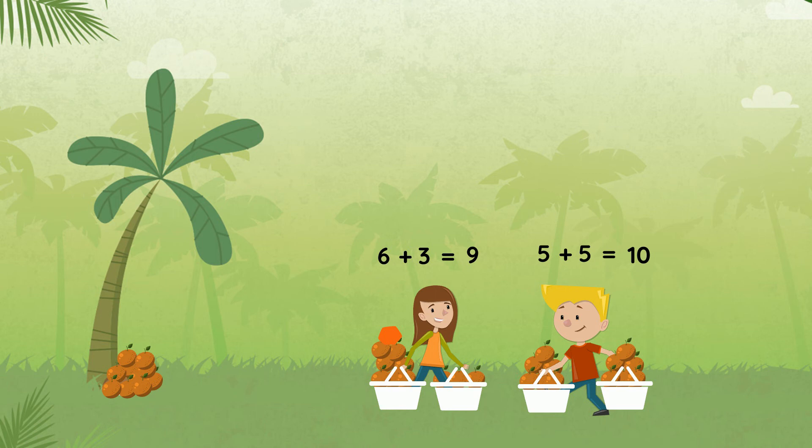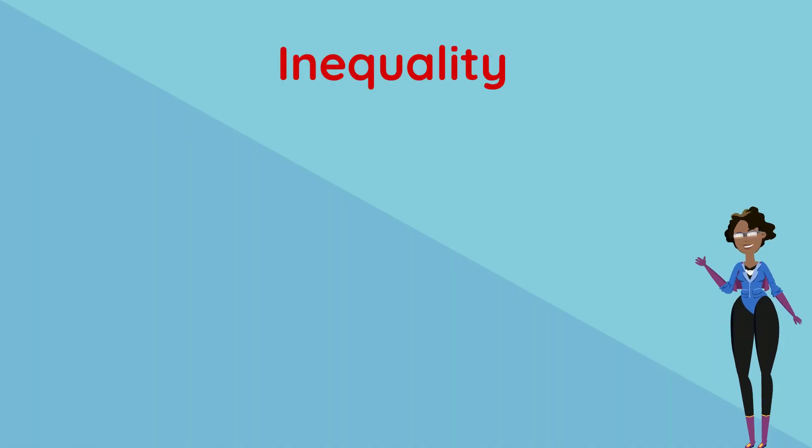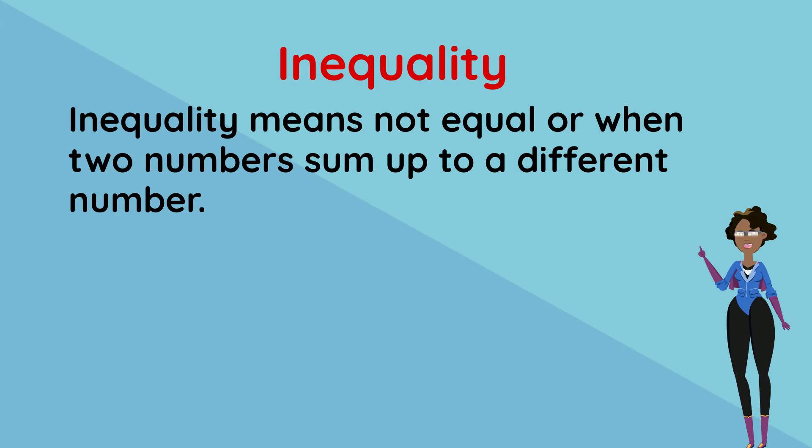Therefore, Jack in fact has ten portugals and Jill has only nine. And so they do not have an equal amount of portugals. This is a case of inequality. Inequality means not equal or when two numbers sum up to give two different numbers.